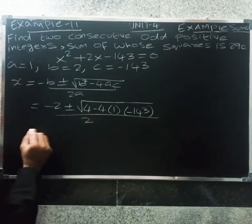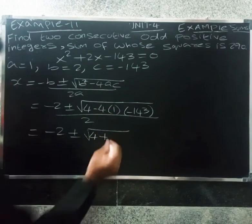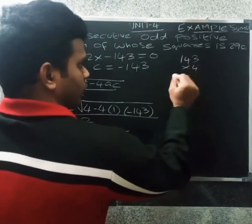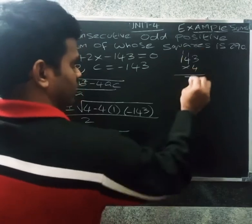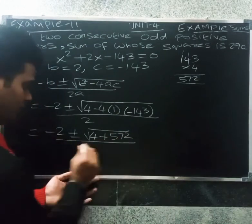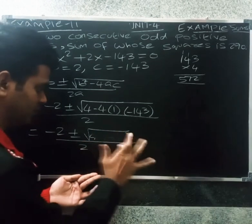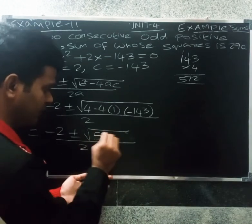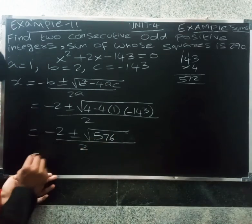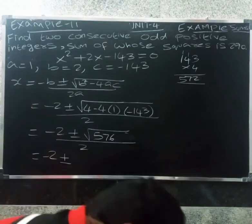x equals minus 2 plus or minus root of 4 minus 4 times 1 times minus 143 divided by 2. So minus 2 plus or minus root of 4 plus, 143 into 4 is 572. So 572 plus 4 equals 576.